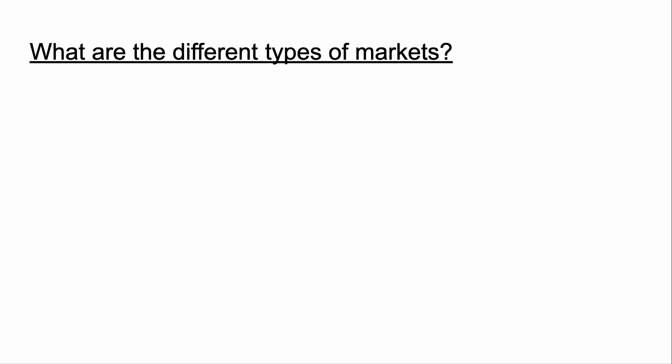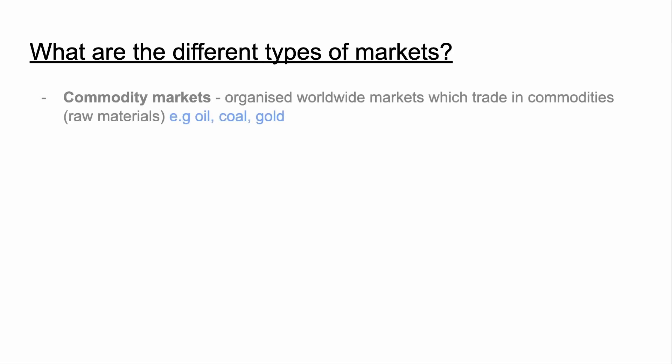So what are the different types of markets? Well, we have commodity markets — these are organized worldwide markets which trade in commodities, which are basically just raw materials. For example, you've got oil, coal, and gold.